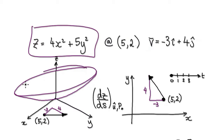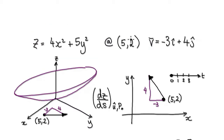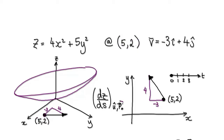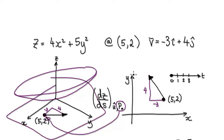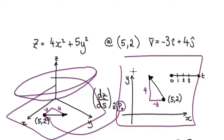Imagine your surface looking something like this. At this given point — 5 across and 2 up in the y direction — so you're looking at this particular point here. Looking at your xy plane, you can imagine this as being your domain, your xy domain, and we are talking about this point: 5, 2.